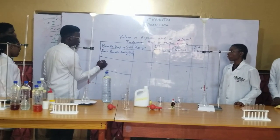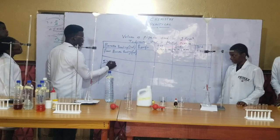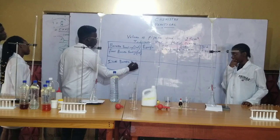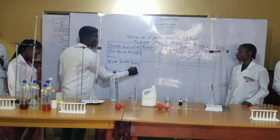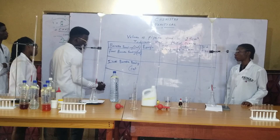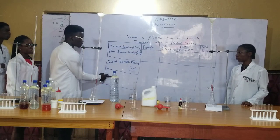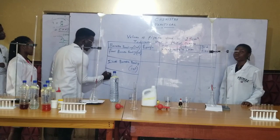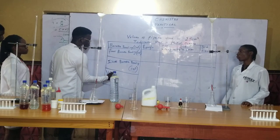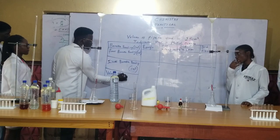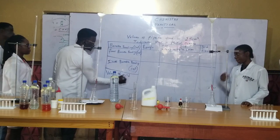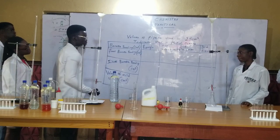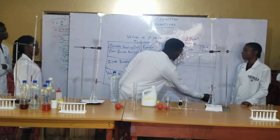We will also have the initial burette's reading in cm³. Then we have the volume of acid used, also in cm³. So that's what you have for your table of experiments.